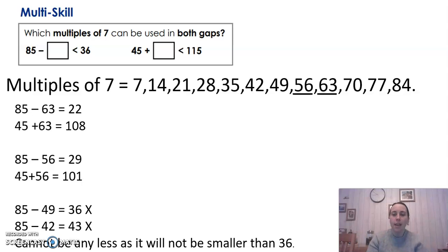So you can see at the top here, I've underlined 63 because 63 is a multiple of 7 that can be used in both gaps. And the other number, the other multiple I found was the multiple 56.